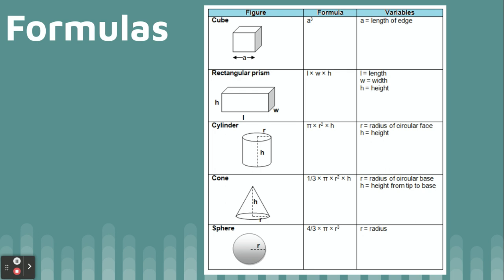For a cylinder, the formula is pi times r squared times h. If you don't have the pi symbol on your calculator, you can use 3.14 — that's an estimate but close enough. When you're doing Khan Academy, pay attention to what they want because they may want it rounded or exact. R is the radius. If you're given the diameter, you have to divide it in half before plugging it into the formula — you cannot plug a diameter into this equation.